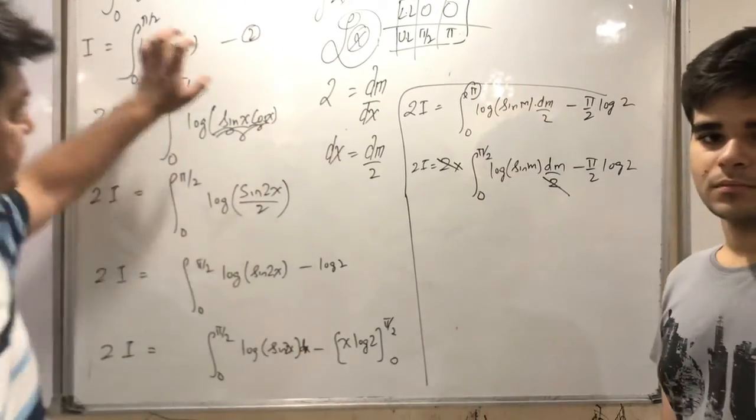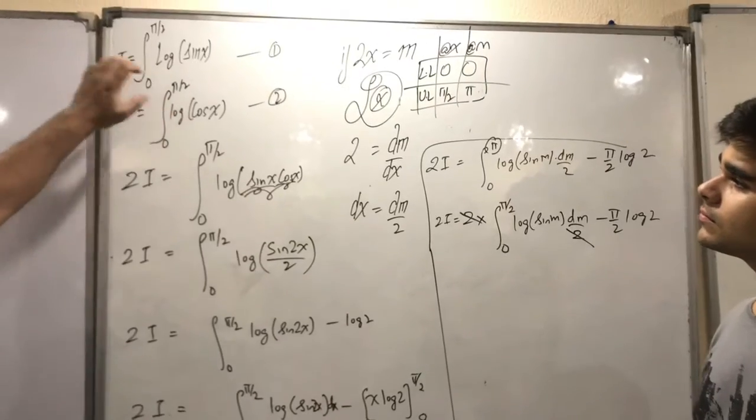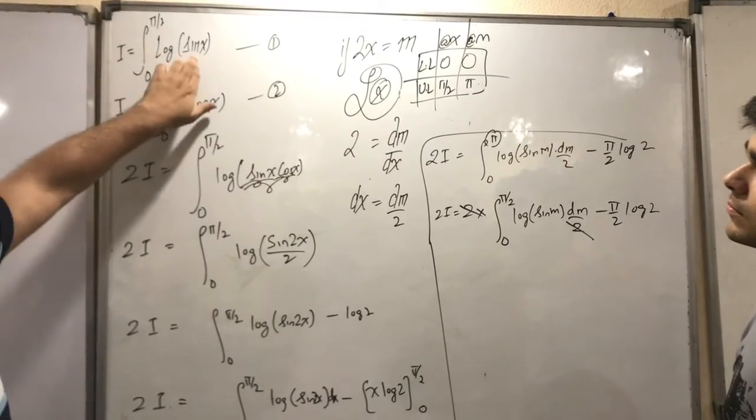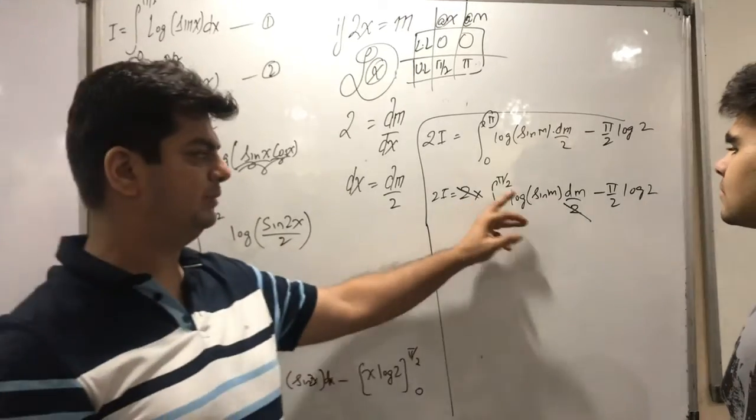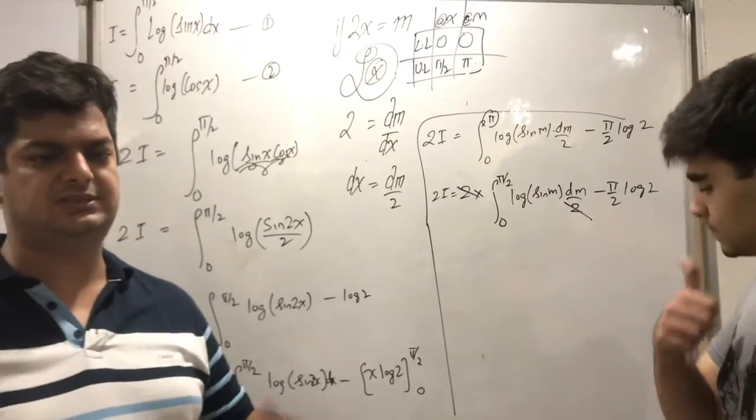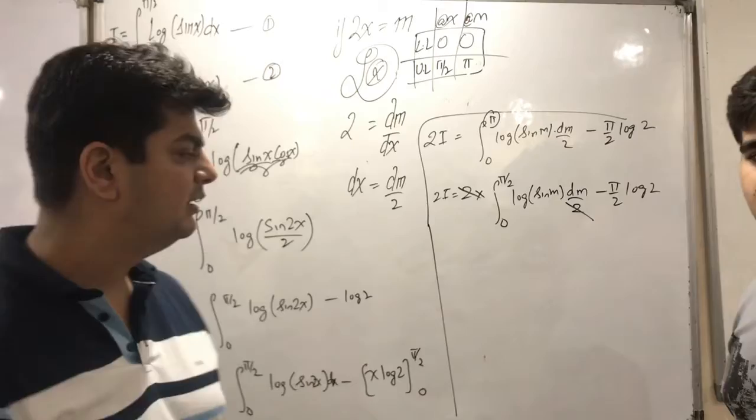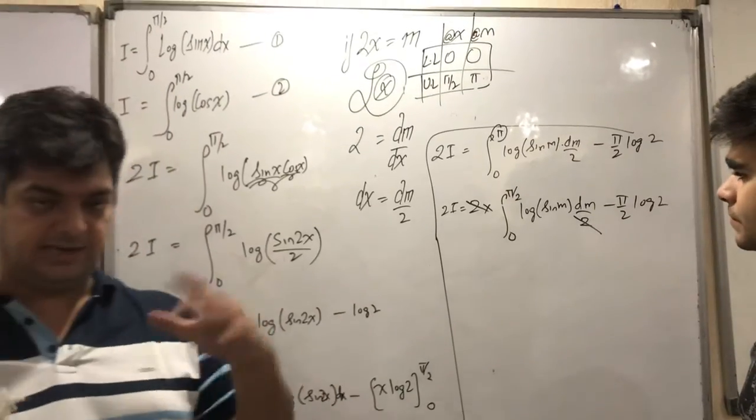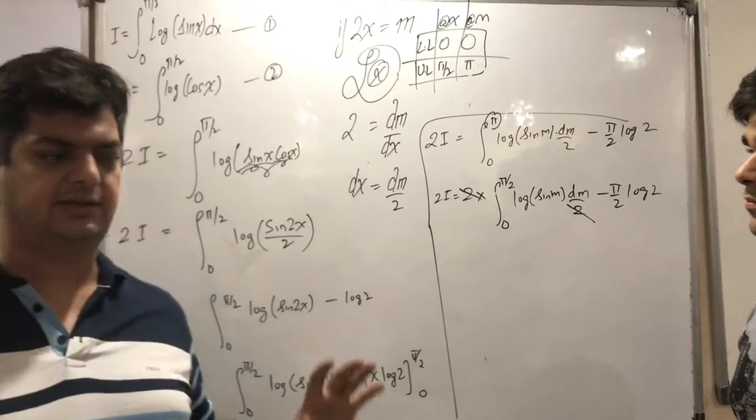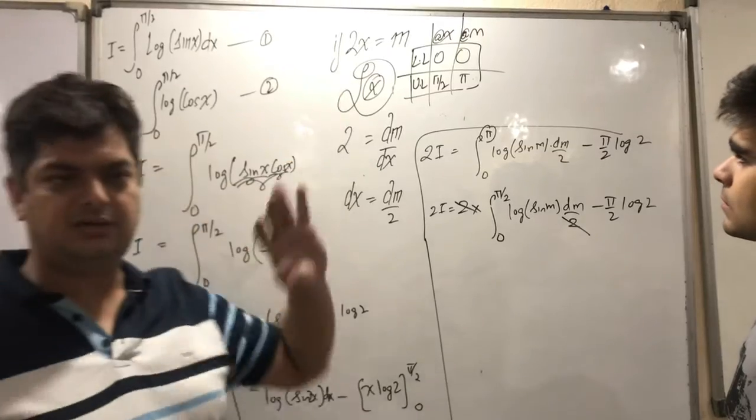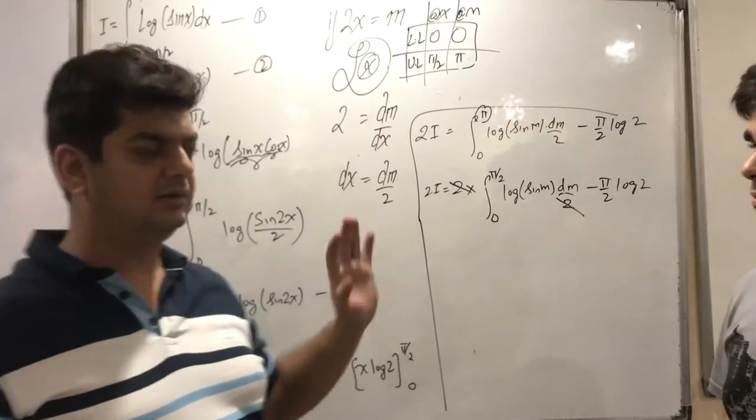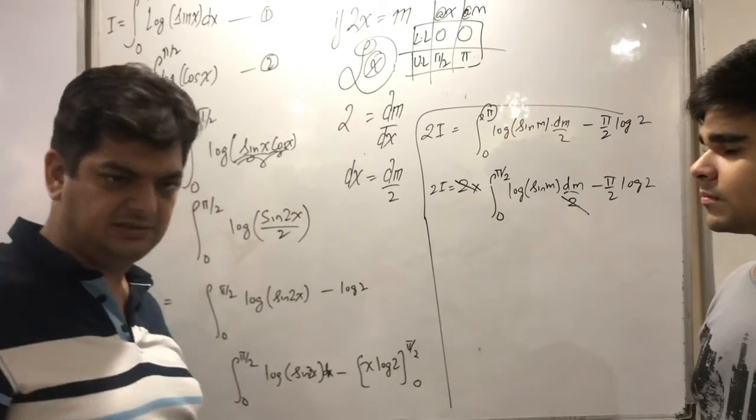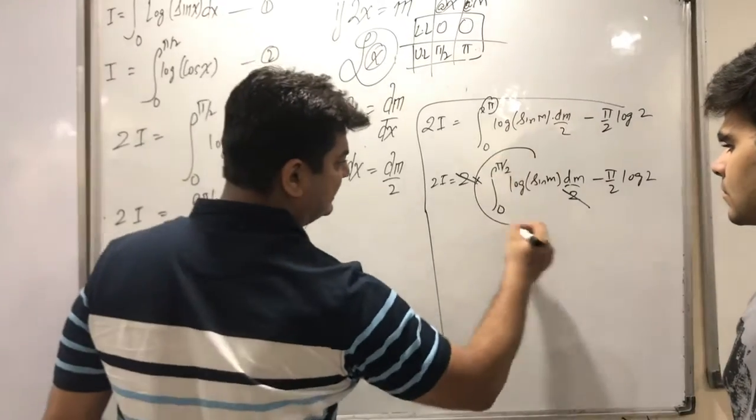If you carefully see here, 0 to pi by 2 log sine x dx and here as well 0 to pi by 2 log sine m dm, they happen to be the same. It is just the matter of m and x here. Because, I do understand that m is not x here, m was 2x. But at the same time, I have the dm equivalent. So, that does not matter as such in here. So, I have this as i.